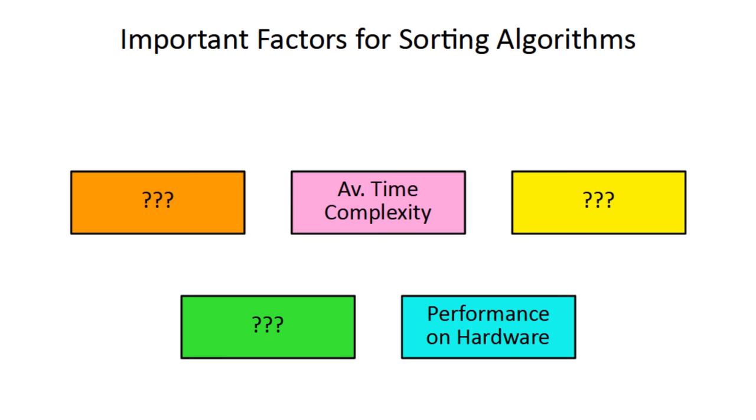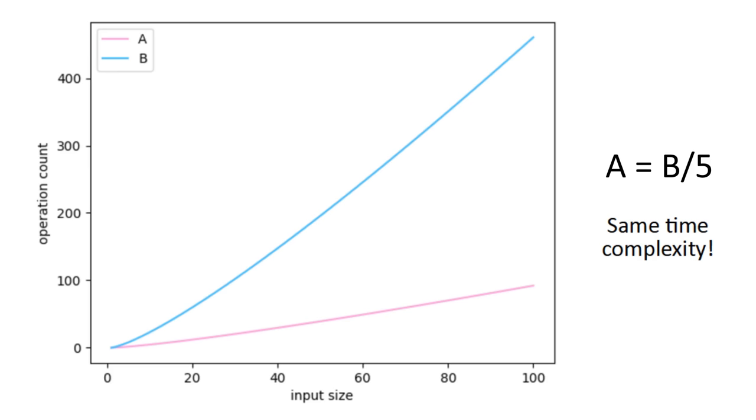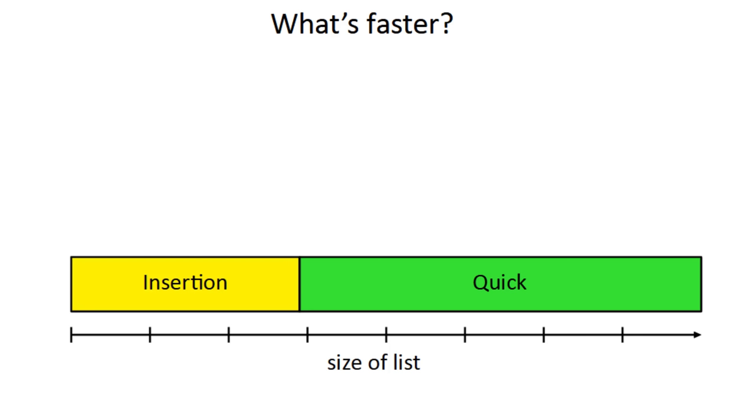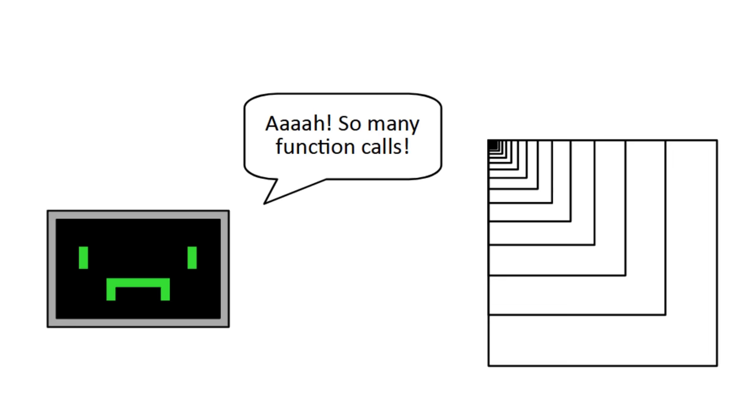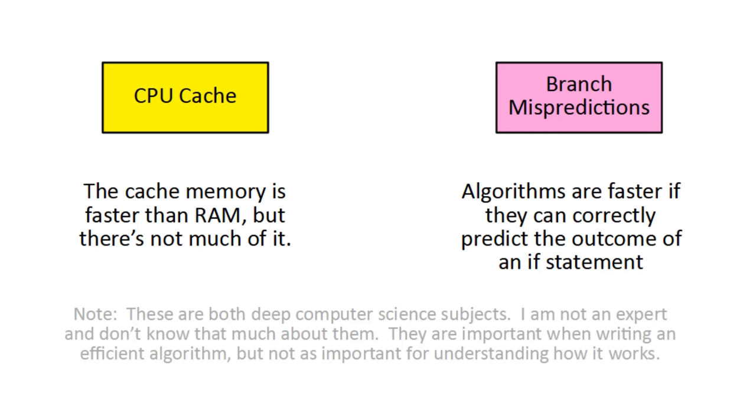First is actual performance on hardware, because the time complexity can only tell you so much. The way it's defined doesn't account for constant scaling factors, so if algorithm A is always 5 times faster than B, it will actually have the exact same time complexity. And algorithms with worse time complexity can even be faster for small lists. For example, insertion sort is faster than quicksort up to a certain point, somewhere from 7 to 50 depending on hardware. This is because things like recursion can be computationally expensive. You also have to factor in CPU cache and branch mispredictions.